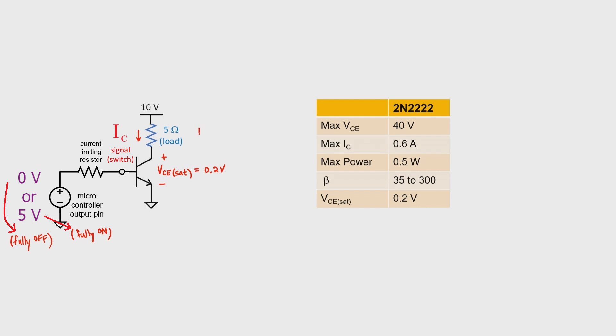We can now use Ohm's law to find the collector current. It's just V over R. So we have 10 volts at the top, 0.2 volts at the bottom, and 5 ohms. This gives us 1.96 amps. I hope that you can already see that we have a major problem.